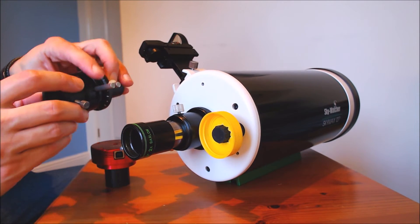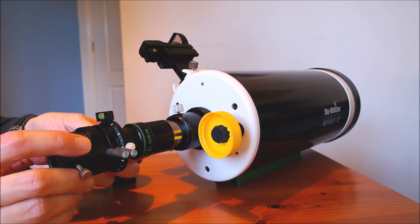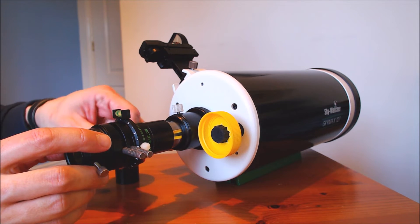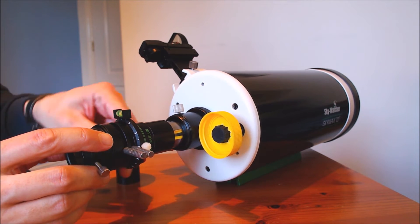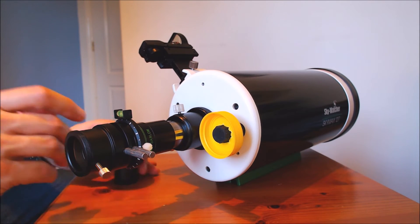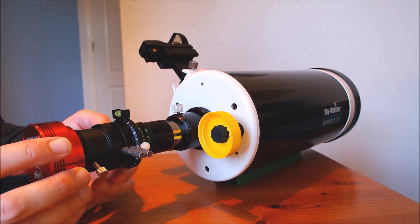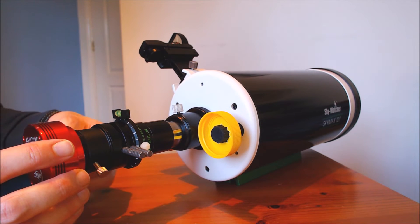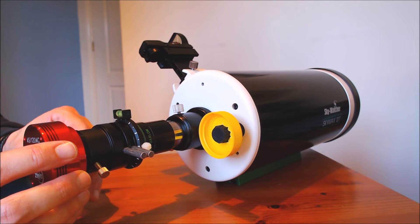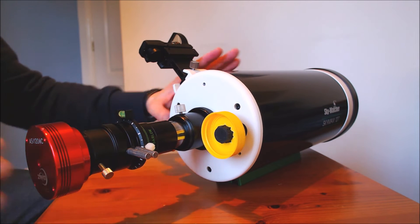Then we're going to attach the ADC. So that goes in here behind the Barlow and we tighten it up. And then finally, we're going to put the camera into the ADC like so. And that is the basic setup we're going to use. We're going to take a few videos of Venus and experiment with the settings of the ADC.